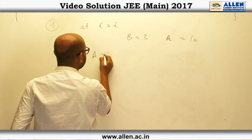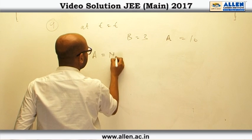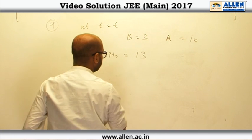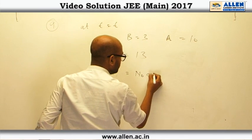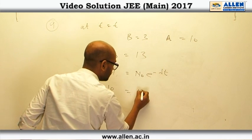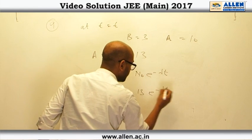So initially A must be, n0 must be 13. So by the equation n is equal to n0 e to the power minus lambda t, if you put 10, 13 e to the power minus lambda t.